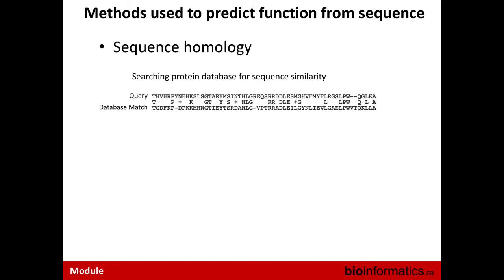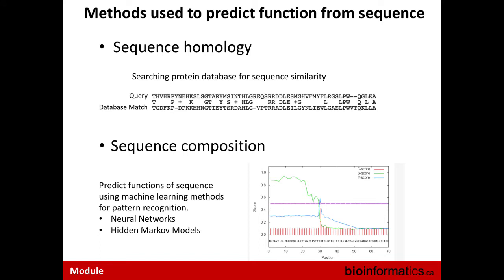The most straightforward way is to look for sequence homology. We take that transcript sequence and search it against a database of all known biological sequences, asking whether there are other sequences similar to it — similar enough that we might infer they're related. If that protein it matches has a known function, perhaps this transcript encodes a protein with a similar function. Alternatively, we might look at sequence composition itself: neural networks, hidden Markov models, and various machine learning methods — pattern recognition algorithms for looking for sequence features that are conserved and indicative of function.